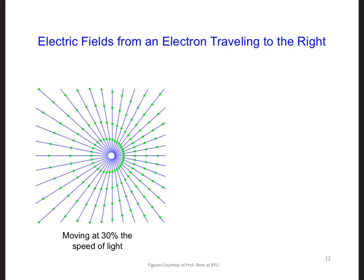Well, all the electric fields are still emitted by the electron equally in all directions, and these electric fields still travel away from the location of the electron at the speed of light.